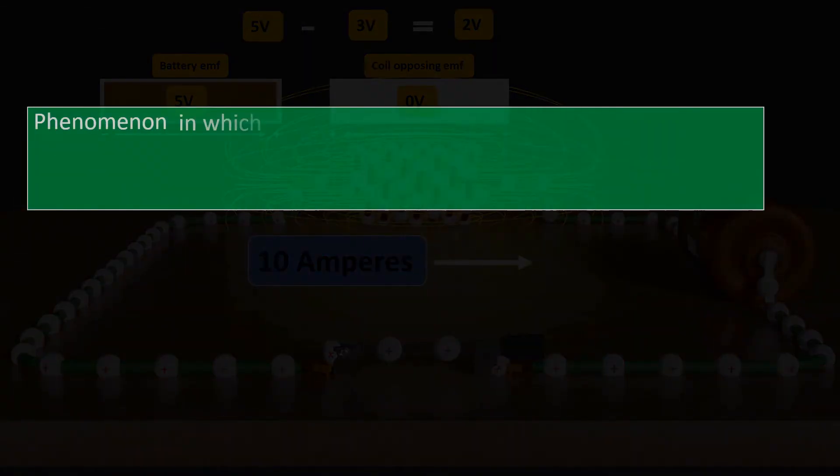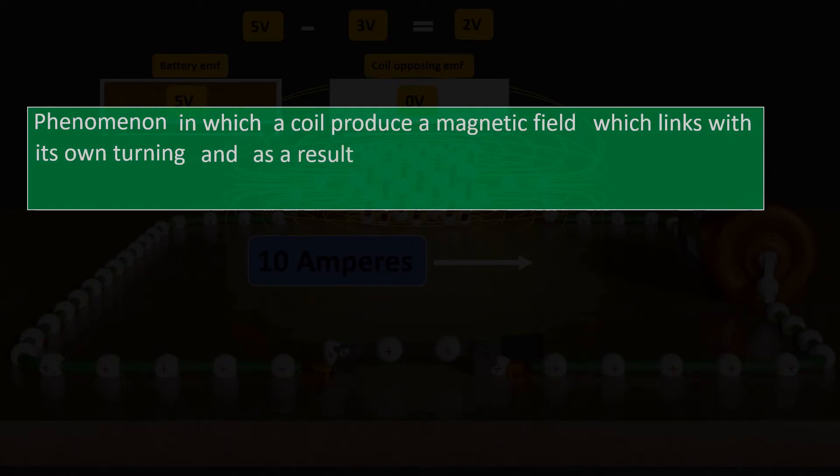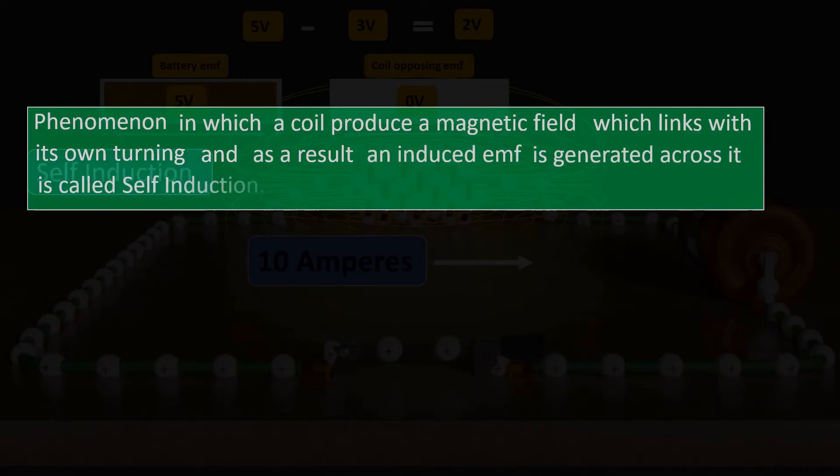Such a phenomenon, in which a coil produces a magnetic field which links with its own turning and as a result an induced EMF is generated across it, is called self-induction.